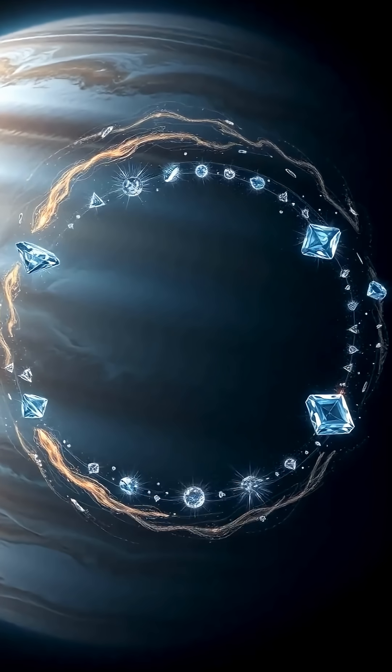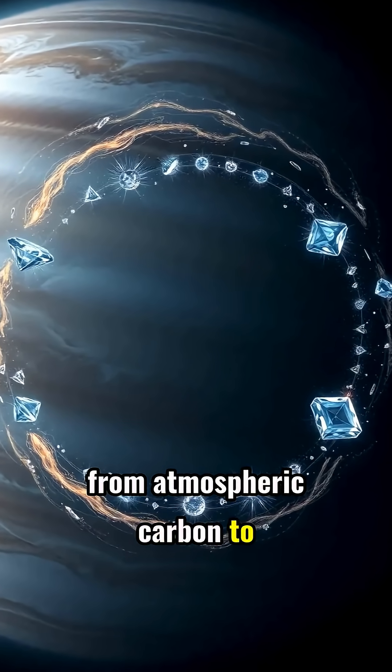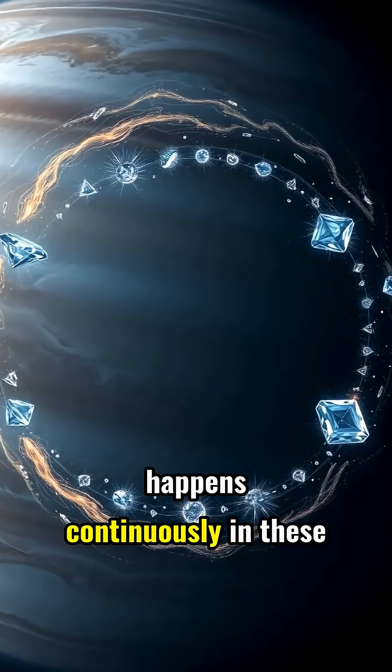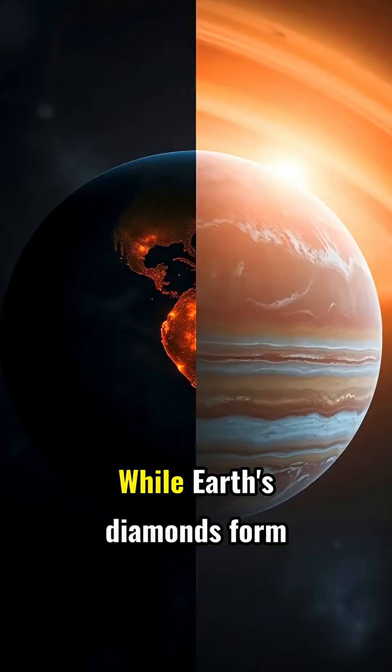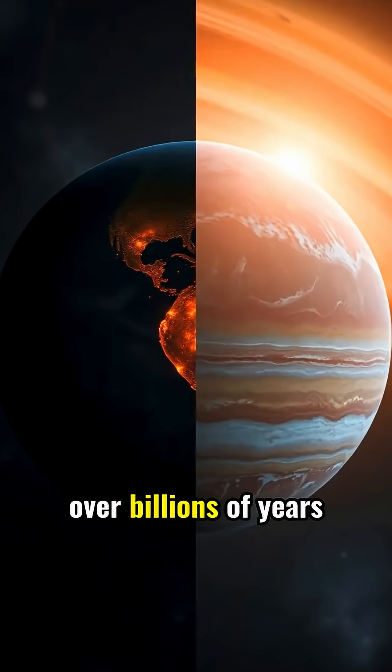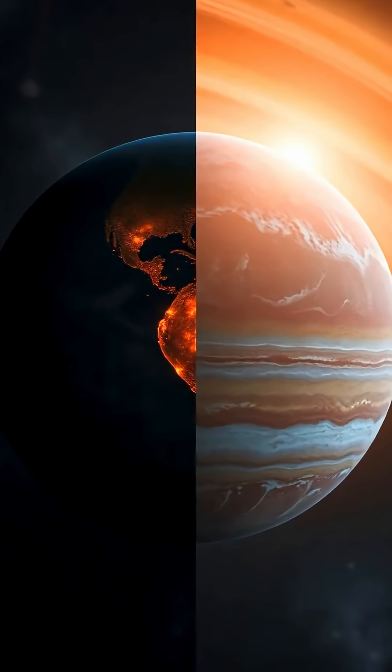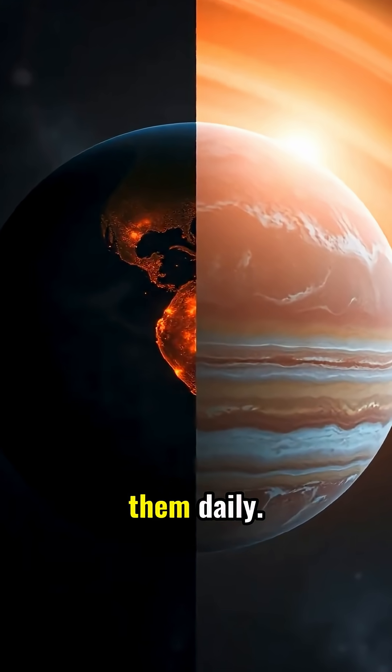This entire diamond life cycle, from atmospheric carbon to destroyed gem, happens continuously in these giant planets. While Earth's diamonds form over billions of years deep underground, Jupiter creates and destroys them daily.